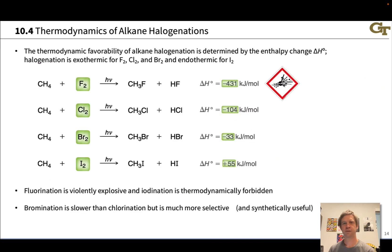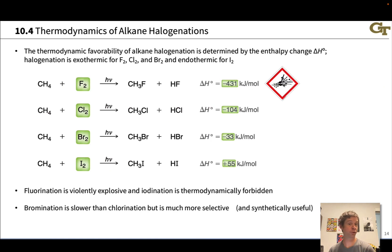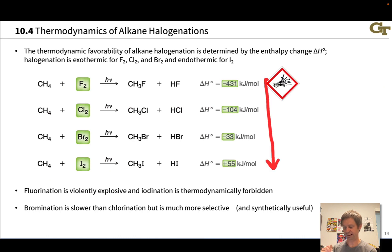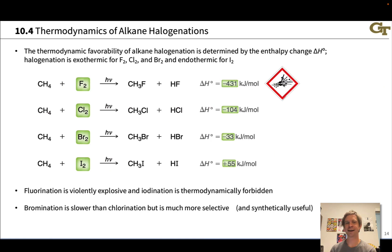Jumping back to halogenation, we can ask this question about other halogens with CH4. We've seen chlorination works just fine. What about fluorination, bromination, and iodination? As we go down this series, the reaction gets more endothermic — less thermodynamically favorable — as we go from F2 to I2.